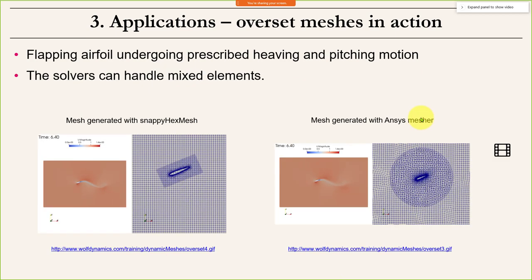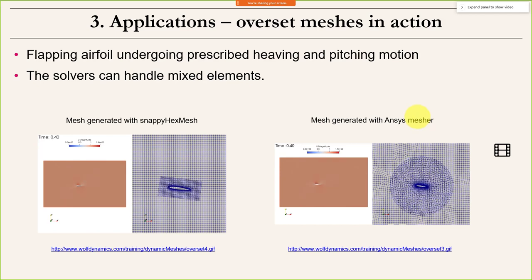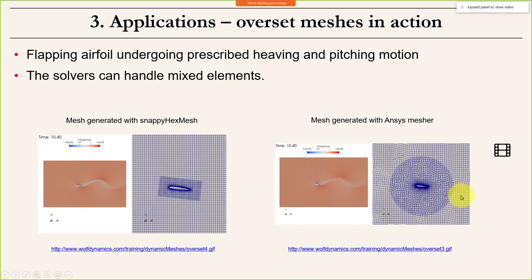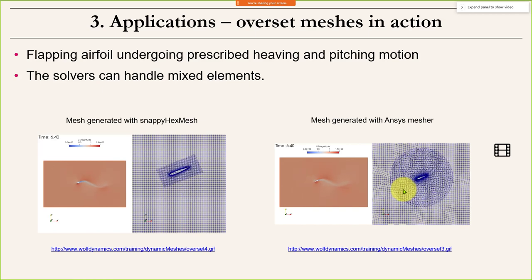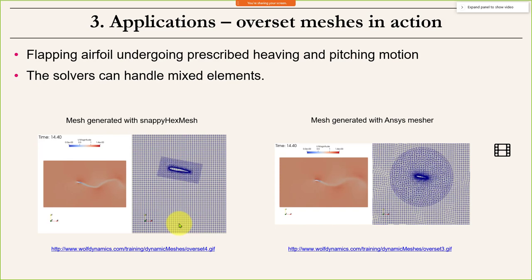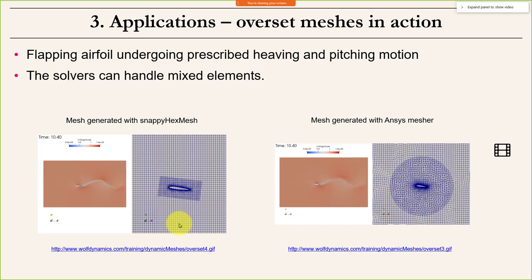Another application is flapping wings. This case is done in OpenFOAM using snappyHexMesh, and another using ANSYS meshing — you can take meshes from different meshing tools, it doesn't matter. You also don't need the same cell types: quads, triangles, all-quads, and general polyhedra work in 2D and 3D. Doing this kind of simulation with Laplacian smoothing would cause mesh quality issues, so overset meshes are very useful here.